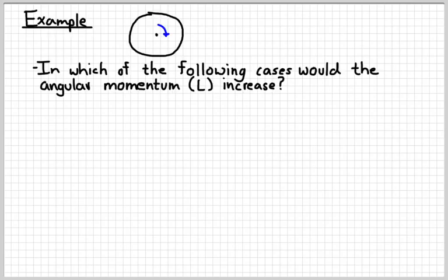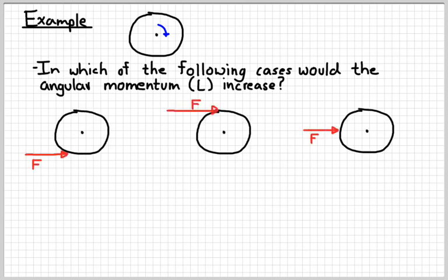Let's look at a quick conceptual example. Here I've got an object that is rotating clockwise. The question is, in which of the cases would the angular momentum of this object increase? And by increase, I mean increase in size. I've got three different scenarios, three different places where we could apply a force that may or may not cause a torque on the object.